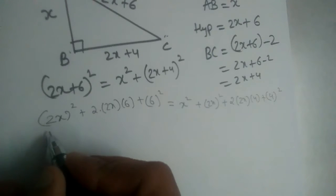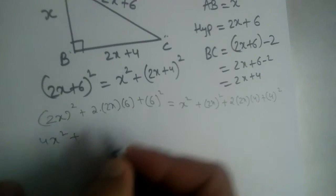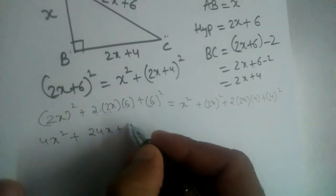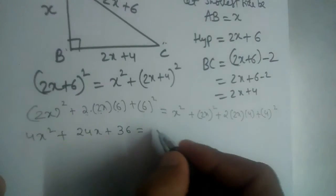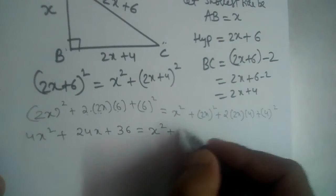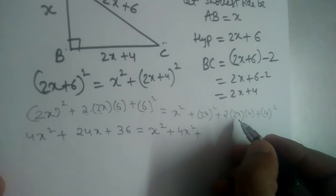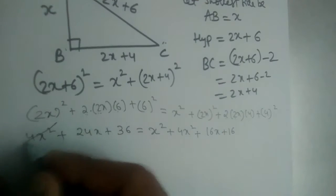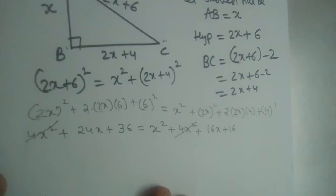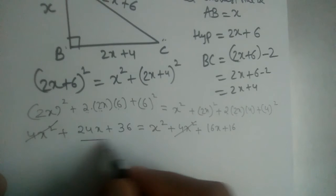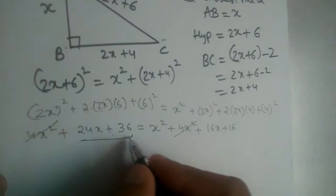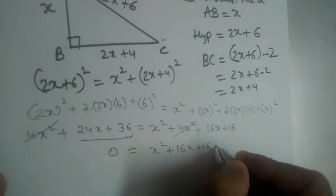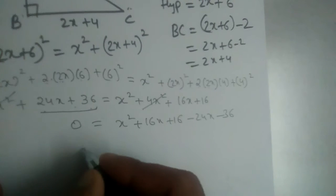Expanding the left side: 4X² plus 24X plus 36. Expanding the right side: X² plus 4X² plus 16X plus 16. The 4X² terms on both sides cancel out, and rearranging gives us 0 equals X² plus 16X plus 16 minus 24X minus 36.